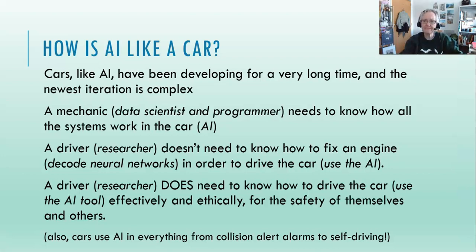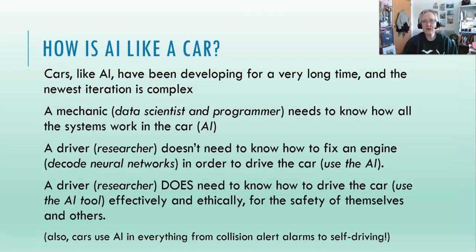So let's start with an analogy to get into the mindset. How is AI like a car? Well, AI has been around for a long time — over 75 years — and like cars, AI has been developing for a long time, and the newest iteration is complex and can be confusing. As a driver, I don't need to know how all the systems work, but a mechanic does. Just like with AI, a data scientist and programmer needs to know how all the systems work, but the researcher doesn't. We don't need to know how to decode neural networks in order to use AI. What we do need to know, whether driving a car or using ChatGPT, is how to do it effectively and ethically for the safety of ourselves and others.